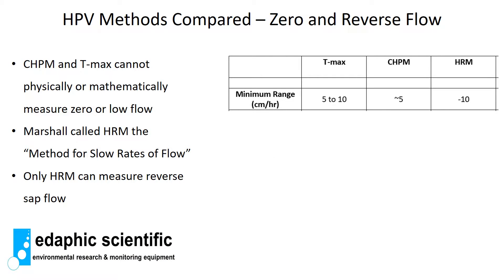The biggest difference between the various heat pulse methods is the minimum range that they can measure. The Tmax and the compensation heat pulse method can only measure to a minimum range of about 5 centimeters per hour, give or take.